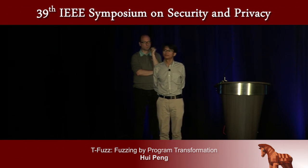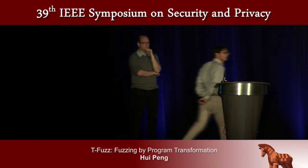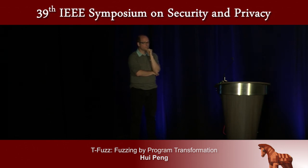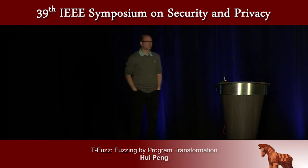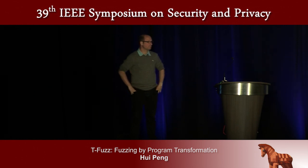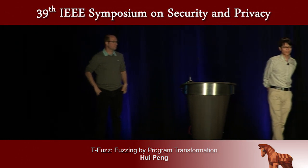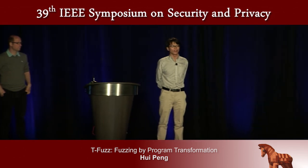Peter Neumann asks: I've always been a little suspicious of fuzzing. When you're claiming that you're finding bugs, can you make a distinction between exploitable bugs and ordinary bugs that nobody could ever do anything with? Well, I didn't verify whether the crashes found in the real-world programs are exploitable or not — but I will definitely check that. Thanks for the question.